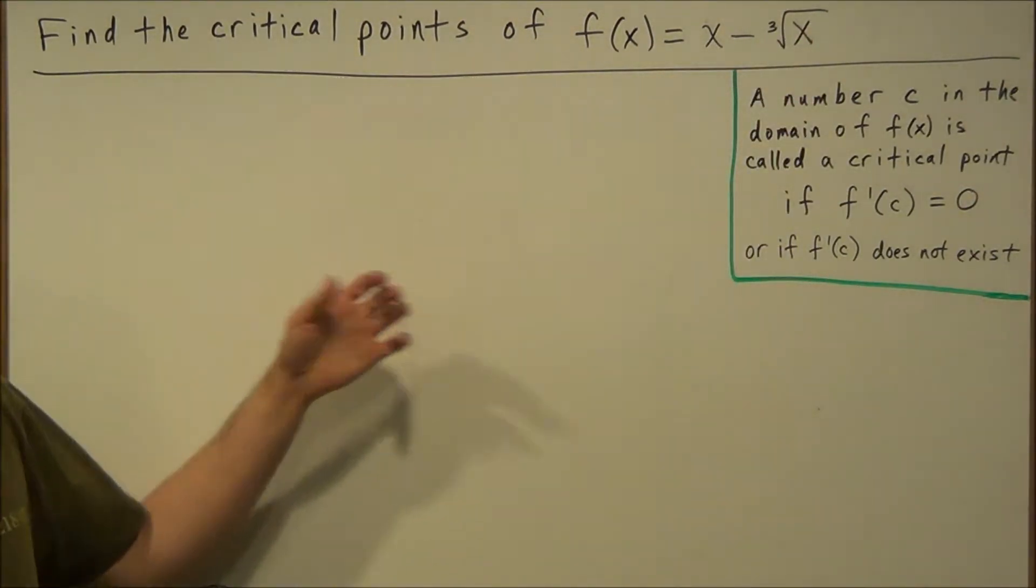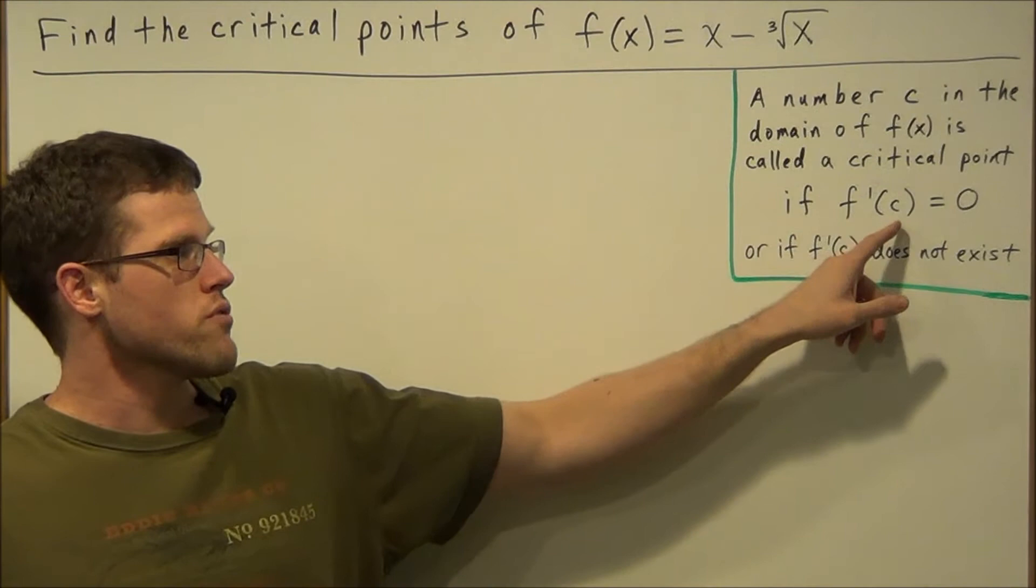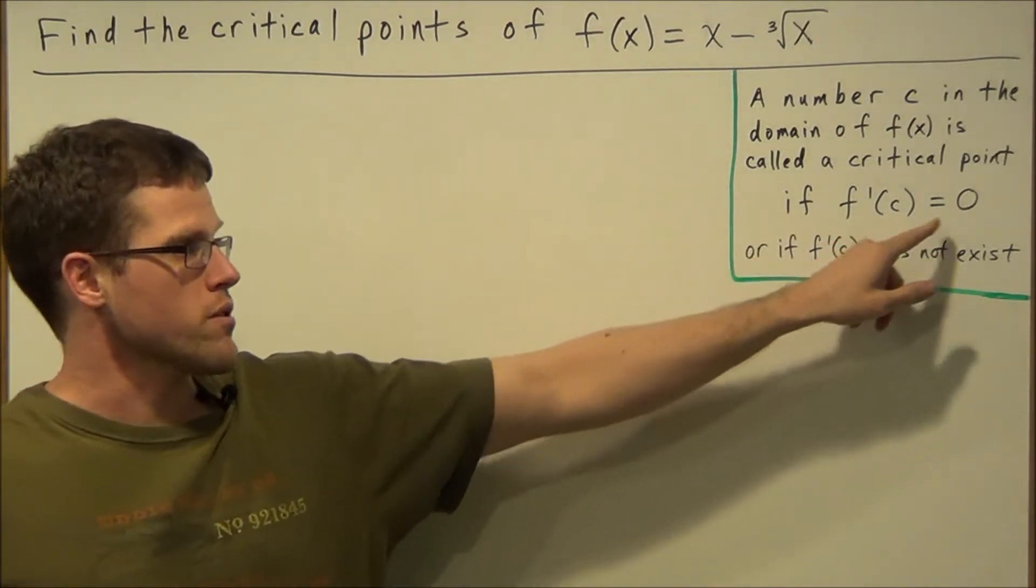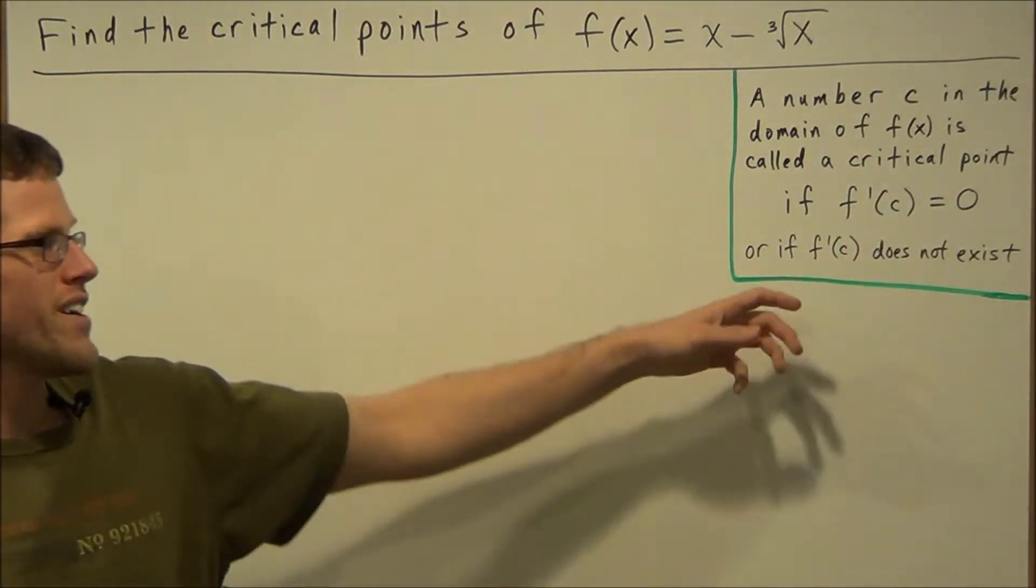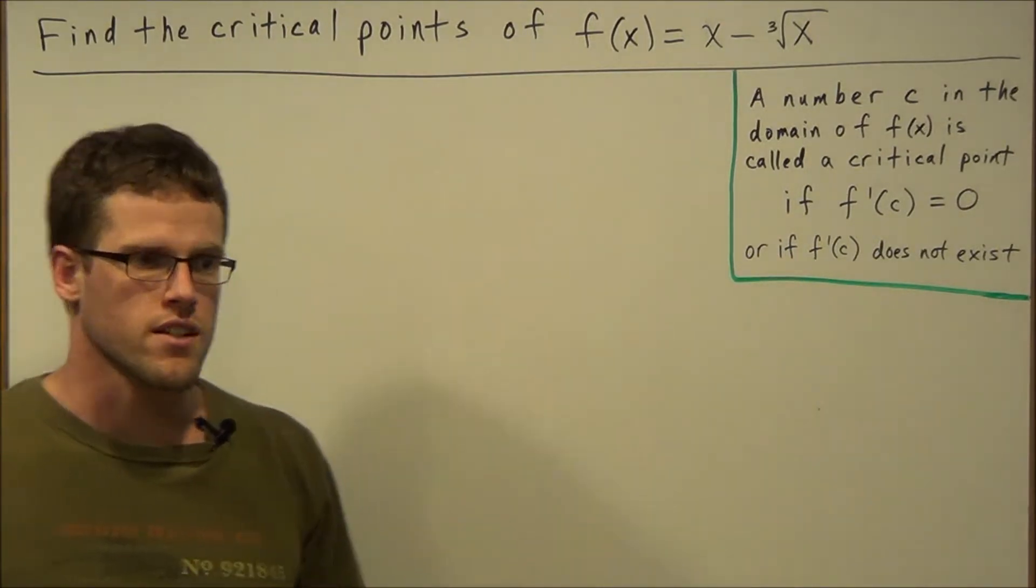To find the critical points, we're going to find the first derivative and we're going to find where the first derivative is either equal to zero or if there are any values where the first derivative doesn't exist.